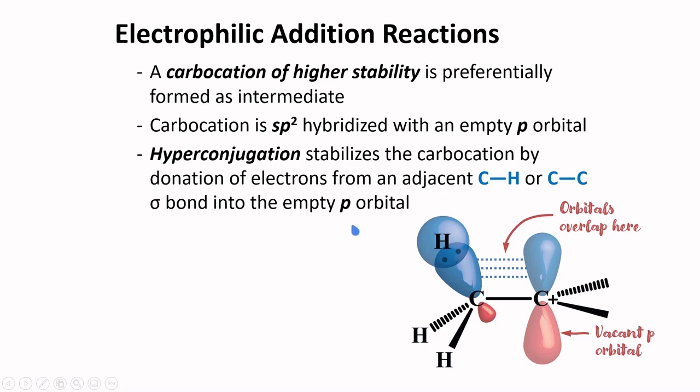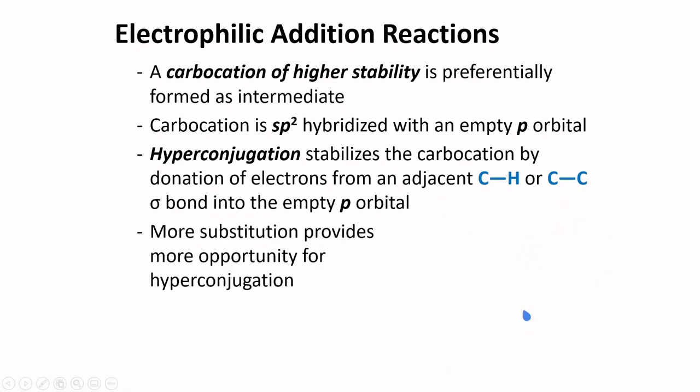This type of donation stabilizes the carbocation intermediate. More substitution provides more opportunity for hyperconjugation. If we are to compare these two species, there are several ways for hyperconjugation to occur in this secondary carbocation. Several sigma bonds are available for electron donation. Compared to this carbocation, we have very few sigma bonds. So this carbocation should be more stable than this carbocation.